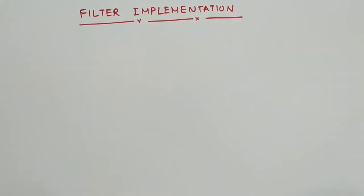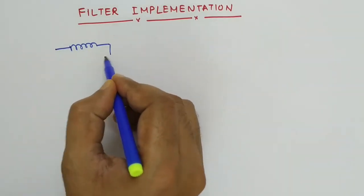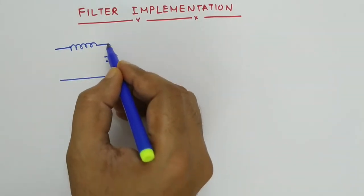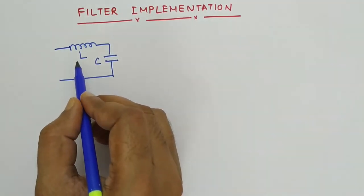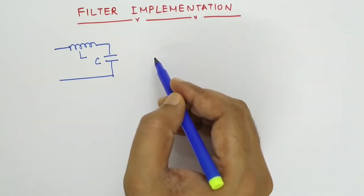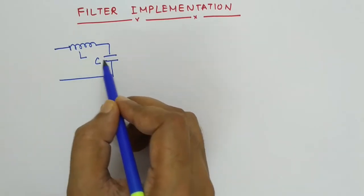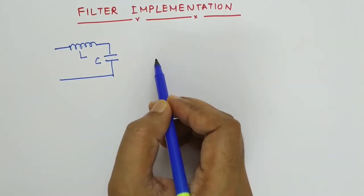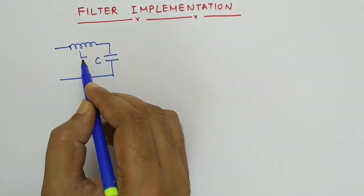Hello friends, welcome to my YouTube channel RF Design Basics. In today's lecture we are going to discuss filter implementation using transmission lines. Let us consider we have an LC circuit given by a ladder circuit — just two elements: one is L and another one is C. If we need to implement this on a transmission line such as microstrip line, we have to convert this lumped equivalent LC to its corresponding transmission line form.